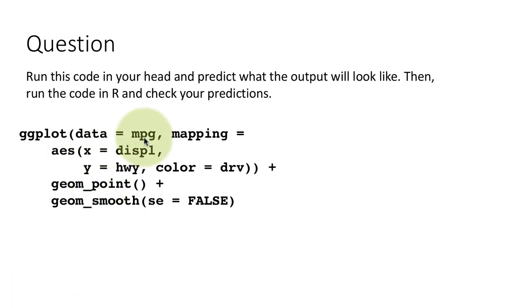So we're saying ggplot data equals mpg, and x and y are mapped to displacement and highway. Color equals drive. And there are two layers, point and smooth. So clearly there are going to be two layers in the output. You're going to have a set of points, and you're going to have one or more lines.